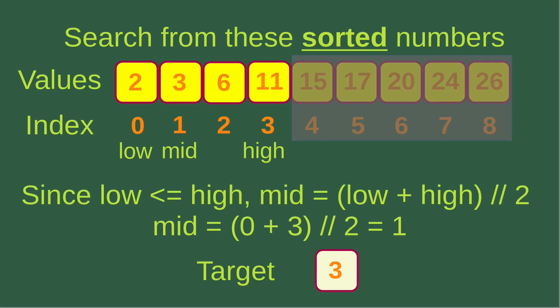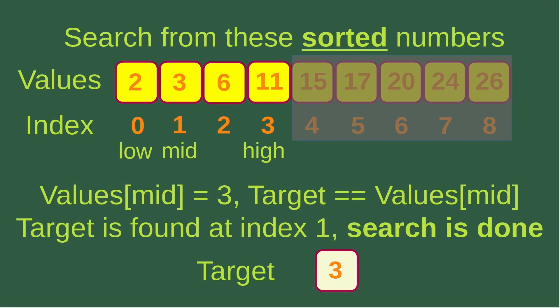Now we have the first half to be handled and the right-hand part can be ignored. Since low index is equal to or smaller than the high index, we find the mid-index, which is equal to low plus high with integer division by two. Mid is equal to three divided by two using integer division, which returns one, so the mid-index becomes one. The value corresponding to the mid-index is three. Since the target is equal to the value corresponding to the mid-index, the target is found at index one, and the search is now done.